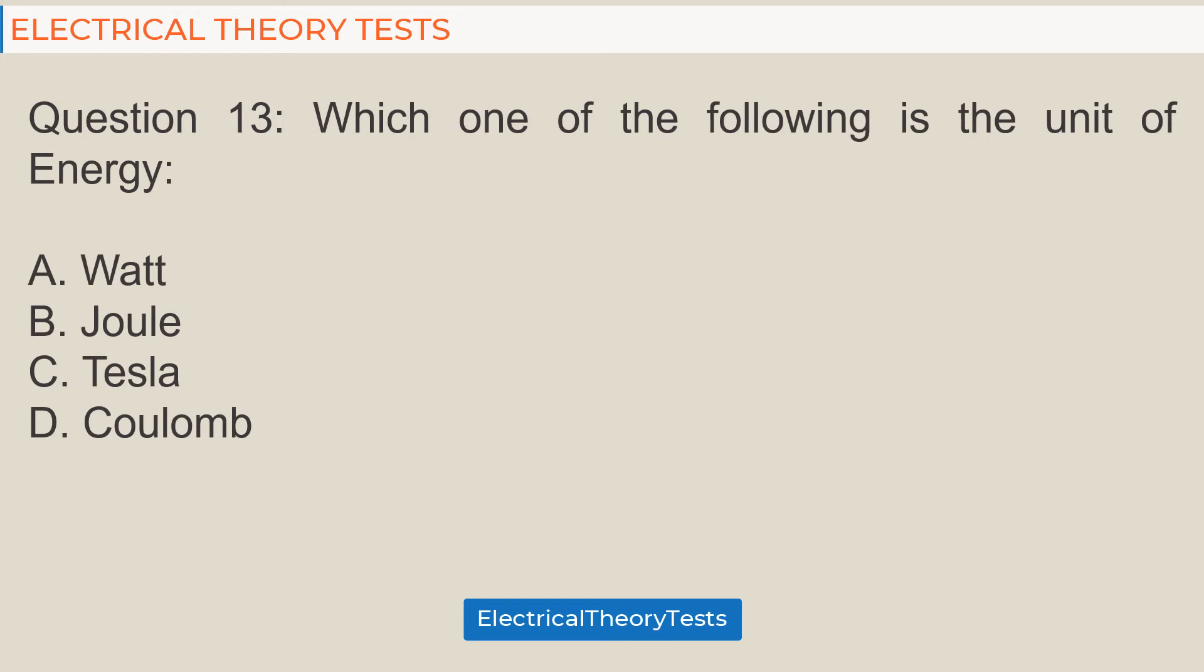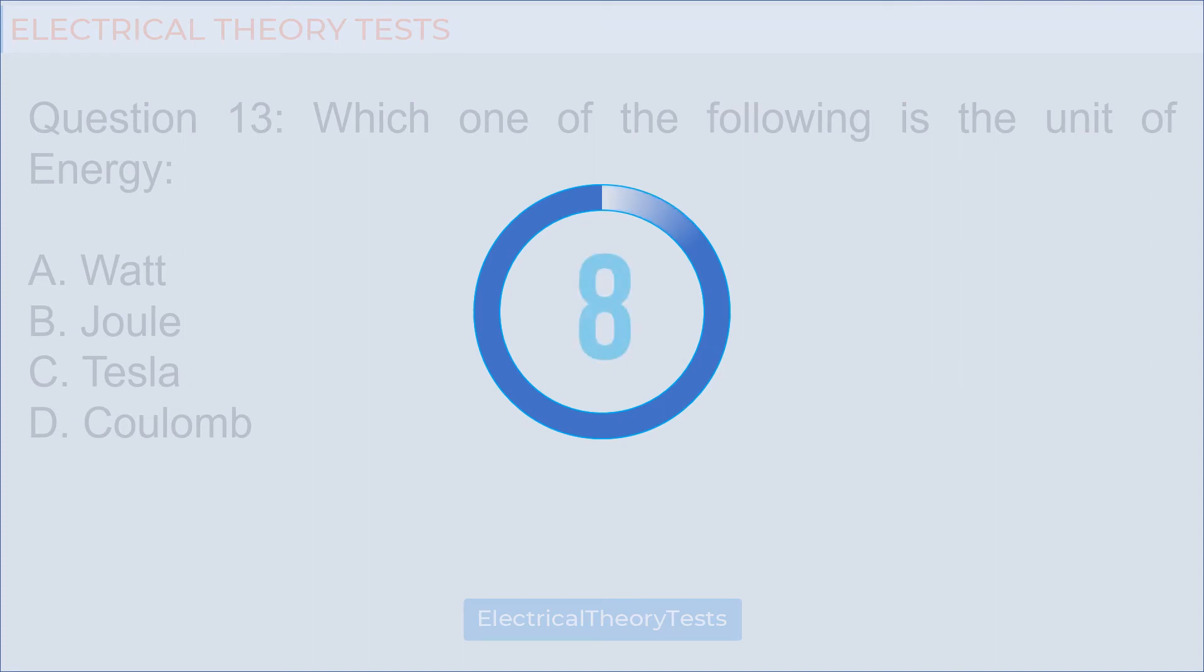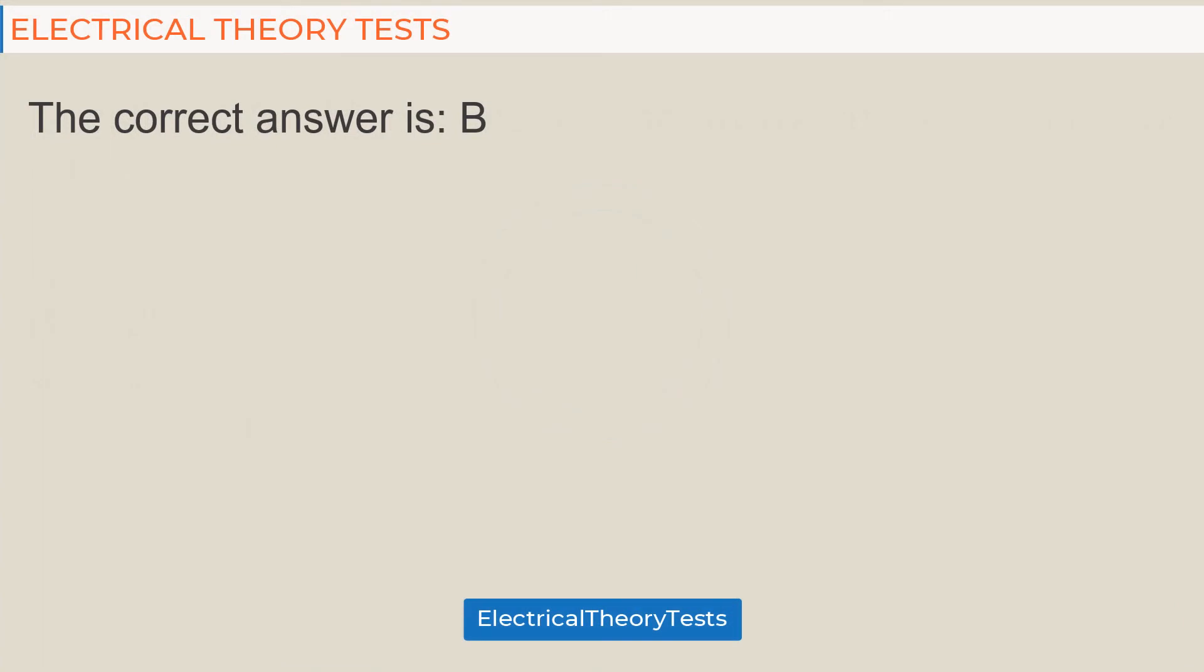Question 13: Which one of the following is the unit of energy? A: Watt, B: Joule, C: Tesla, D: Coulomb. The correct answer is B.